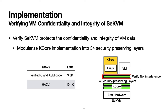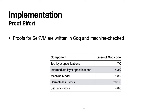The KCore implementation in SCKVM is modularized into 34 security-preserving layers, which includes 3.8K lines of C and assembly code that we verified. KCore includes the verified HACL library to support crypto functionality. This also shows that the retrofit required modest effort; other than HACL, the retrofit only required roughly 3K additional lines of code to KVM. The proofs for SCKVM are written in Coq and machine-checked. In total, 6K lines of code were for KCore's layer specifications, with only 1.7K lines for the top layer specification that specifies all of KCore's behaviors.